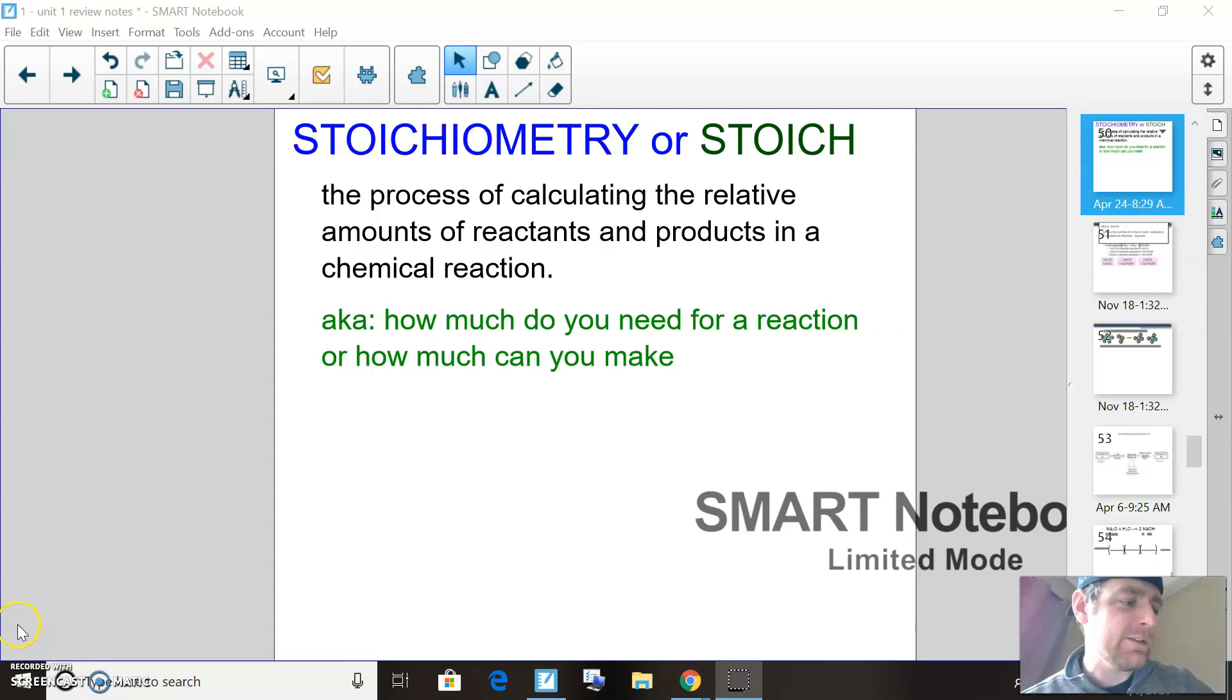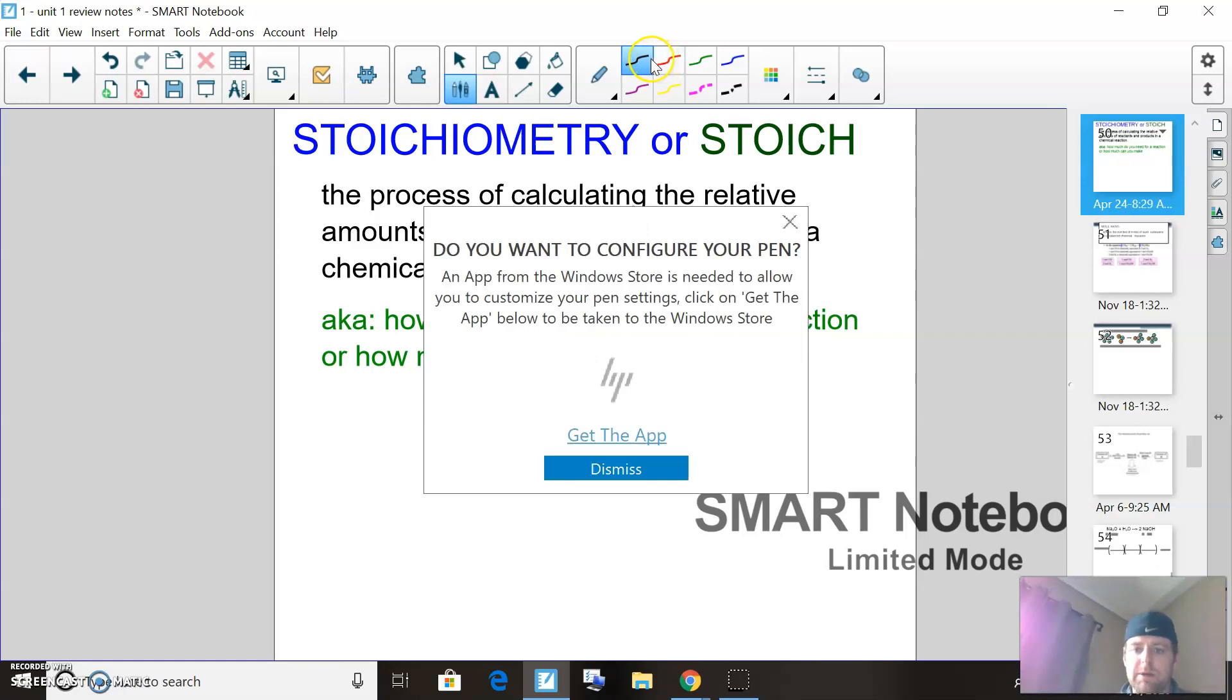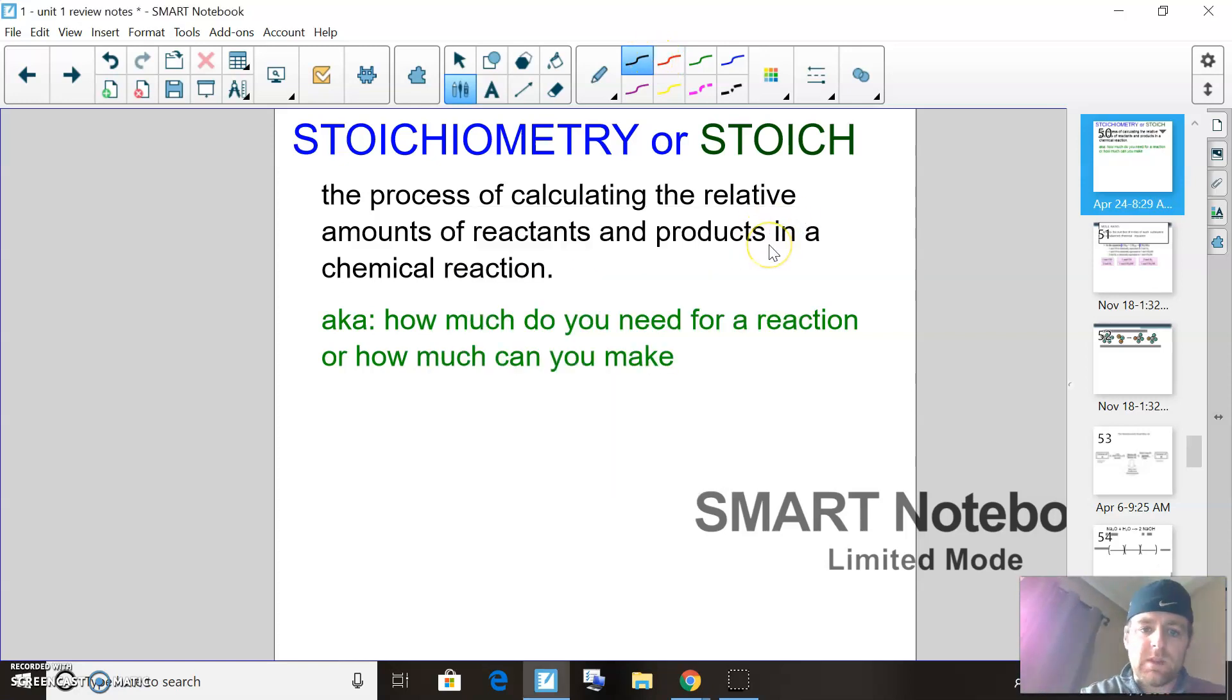What's up all you cool cats and kittens. Alright, here's your learning target for today. We've got two of them: stoichiometry and molarity. Stoichiometry—we pounded this back in regular chem and honors chem—is the process of calculating relative amounts of reactants in a chemical reaction. Basically, what we want to do is say, hey, if I put this much in, how much will I get out?